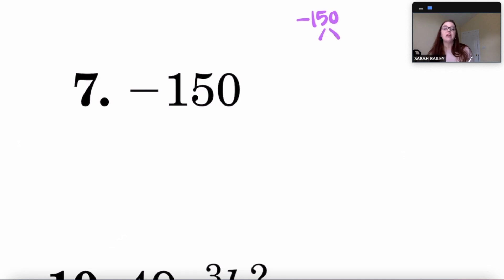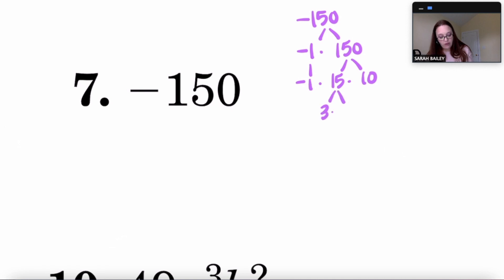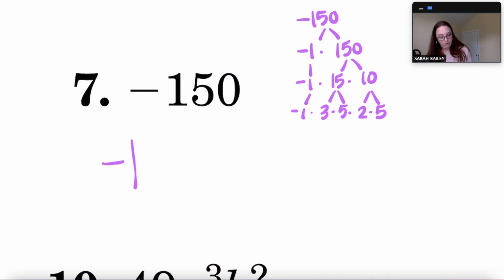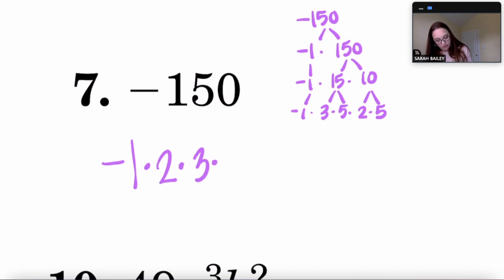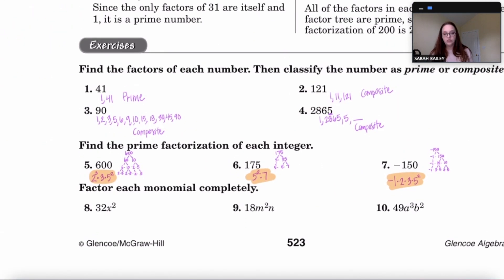For negative 150: since you've probably never done a factor tree with a negative number, write it as negative one times 150. Break 150 into 15 times 10, then 15 into 3 times 5 and 10 into 2 times 5. Bringing the negative one down, the prime factorization is −1 × 2 × 3 × 5².